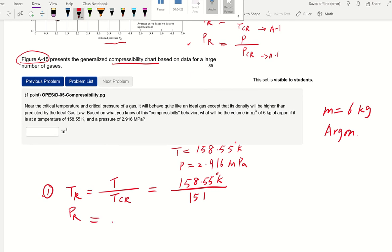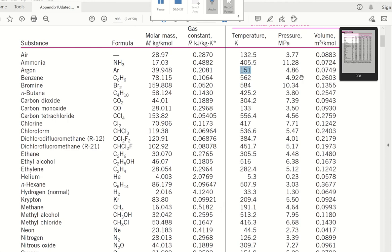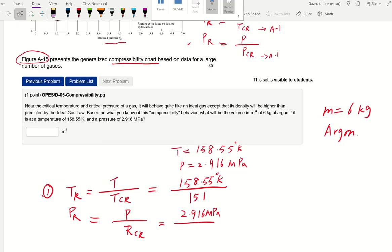Same way, we're going to find the reduced pressure, given pressure divided by the critical pressure, 2.916 megapascal. Then divide by 4.86 megapascal. All right, let's go ahead and calculate see what we got. So we have the TR and PR calculated as 1.05 and 0.6.